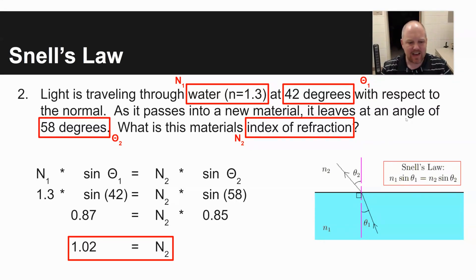To isolate n, what I would do then is take my 0.87 divided by 0.85, and I come up with an index of refraction of 1.02 for this problem.